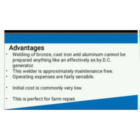Here we see the advantages. Welding of bronze, cast iron, and aluminium cannot be done as effectively by a DC generator. This welder is approximately maintenance-free. Operating expenses are fairly reasonable. Initial cost is commonly very low. This is perfect for farm repair.